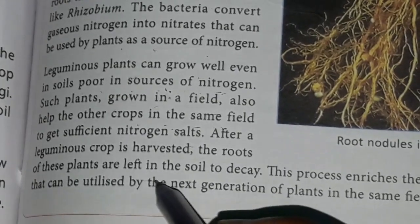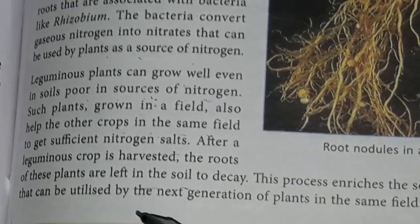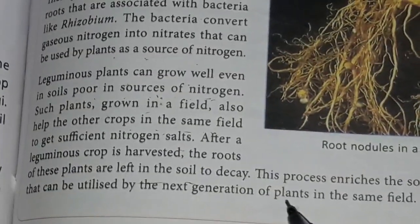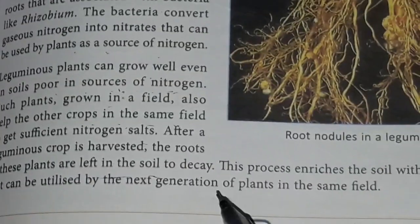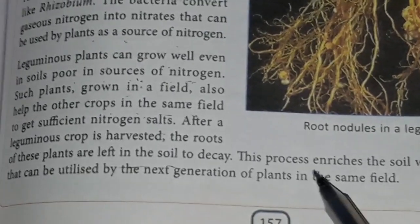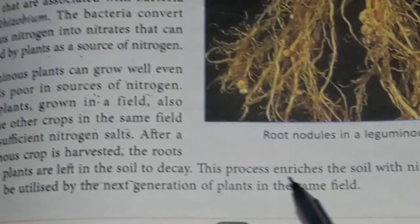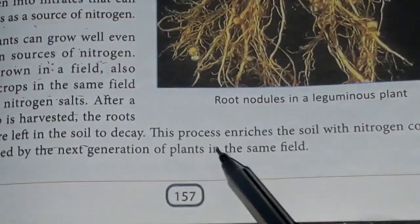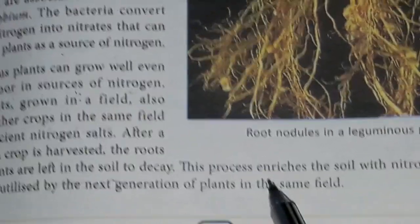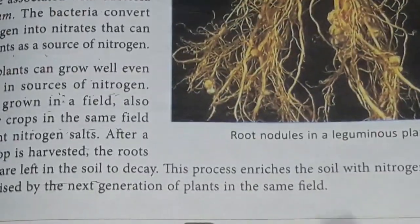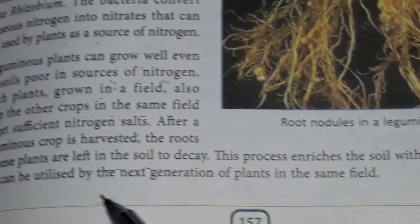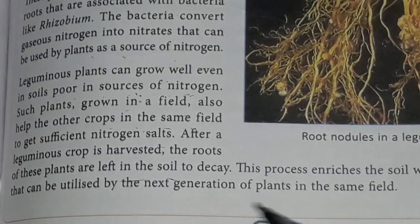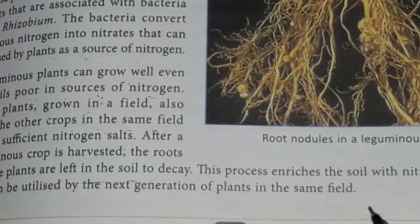The roots of these plants are left in the soil to decay, which enriches the soil with nitrogenous compounds. This process is known as crop rotation — मिट्टी को nitrogen compounds से धनी बनाता है — and that can be utilized by the next generation of plants in the same field, जो अगले generation में लगाये जाने वाले पौधों के लिए बहुत लाभदायक होता है।